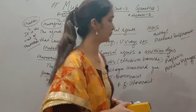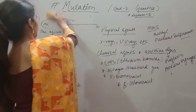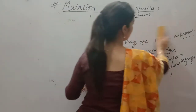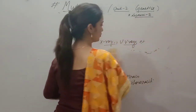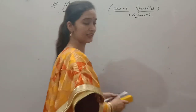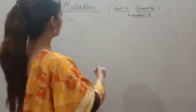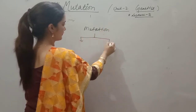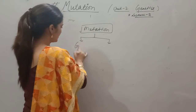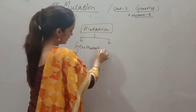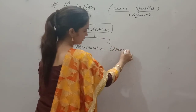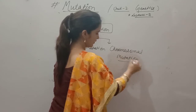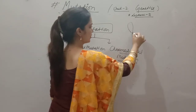Now, what types of mutations are there? If mutations occur in genes, they are called gene mutations. If they occur in chromosomes, they are called chromosomal mutations. Let's discuss the reasons behind these mutations. Mutation may be gene mutation or chromosomal mutation.